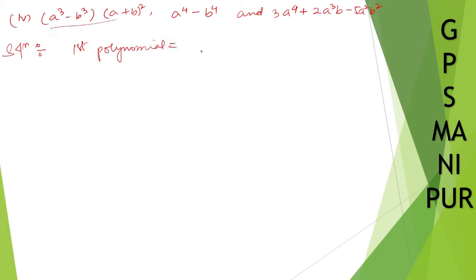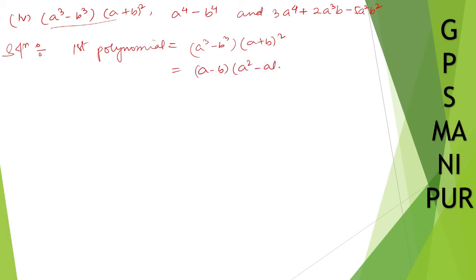First polynomial is a cube minus b cube times (a plus b) whole square. I can write a cube minus b cube as (a minus b)(a square plus ab plus b square), and (a plus b) whole square as (a plus b) into (a plus b). Now moving to the second polynomial.